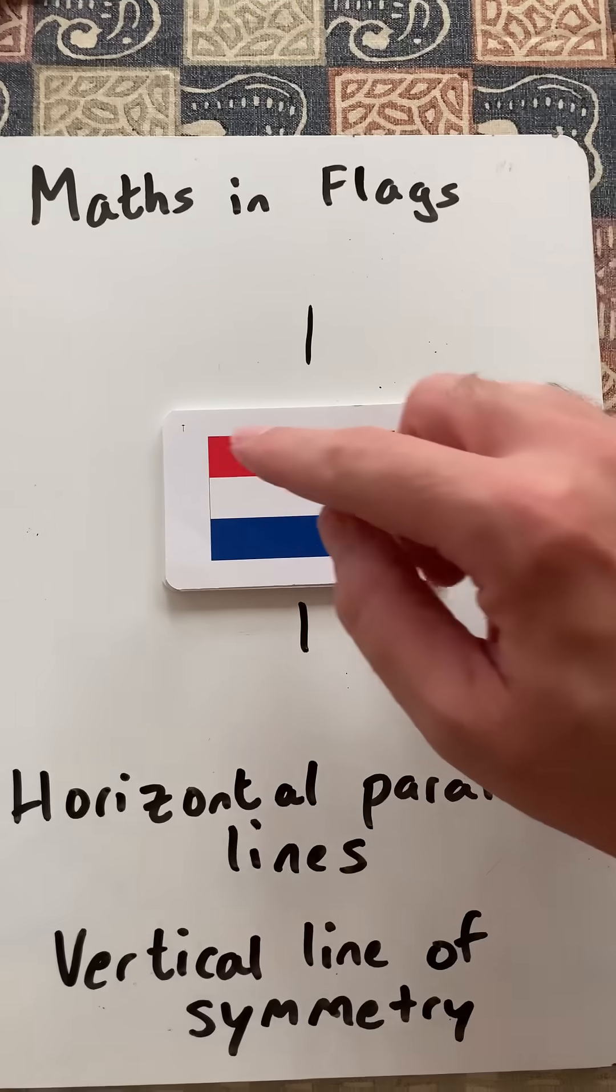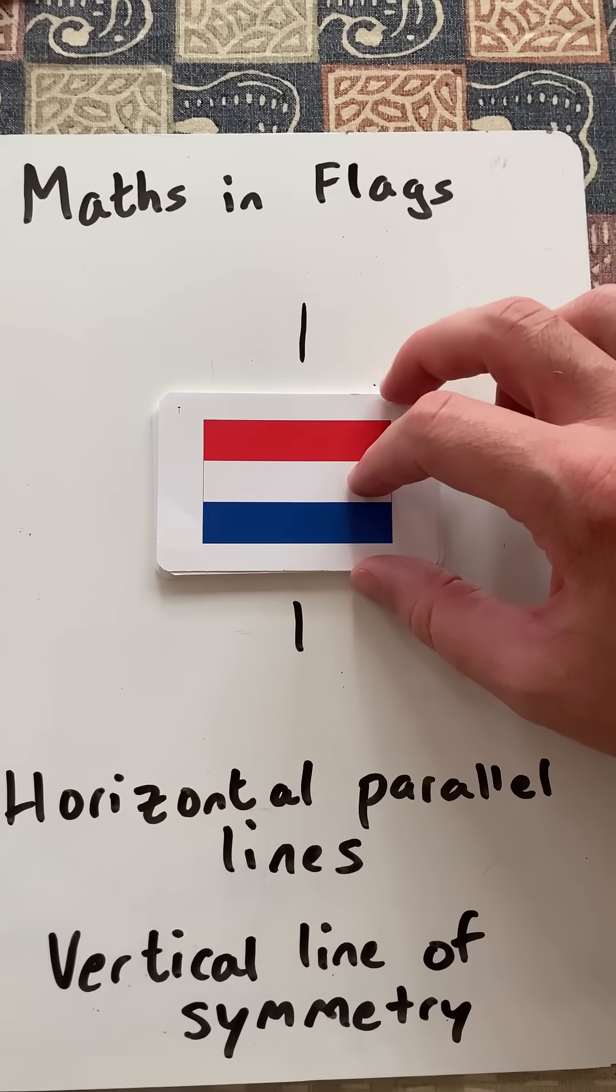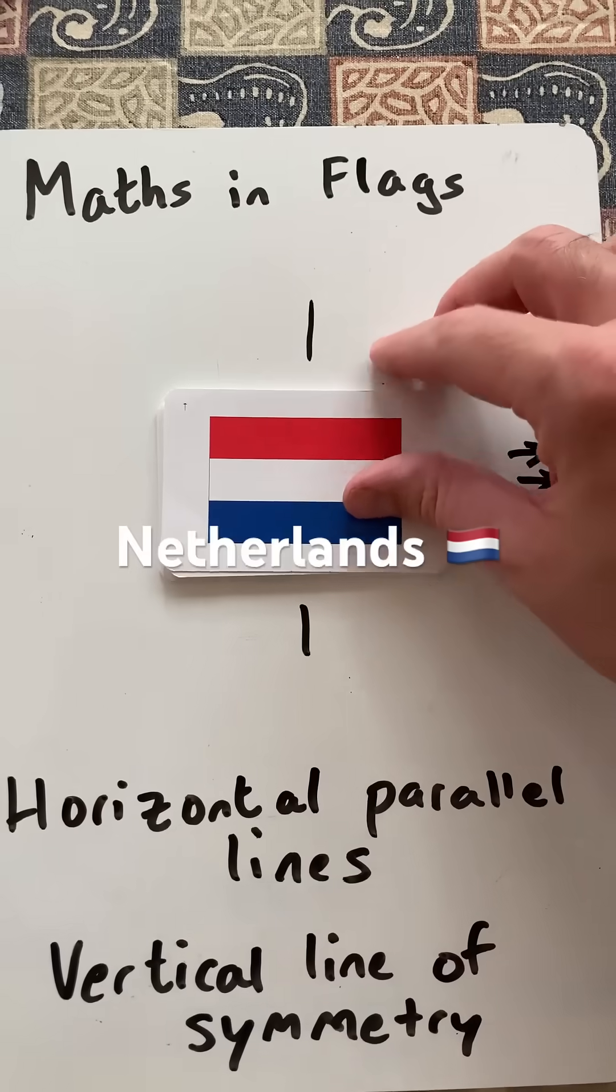We'll start off with those that just have these three block sections, starting with that of the Netherlands.